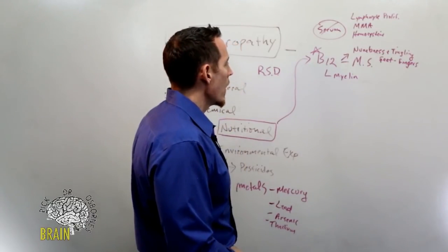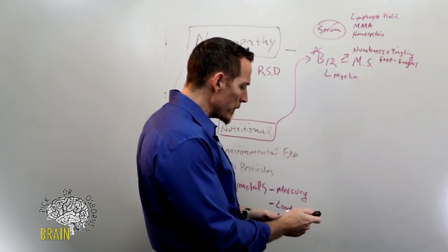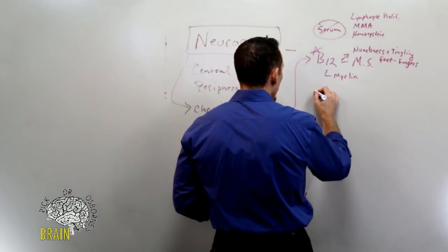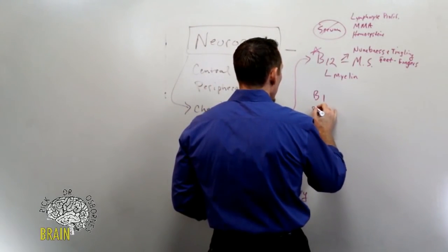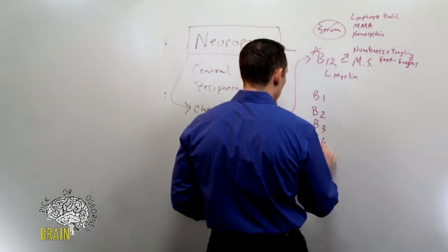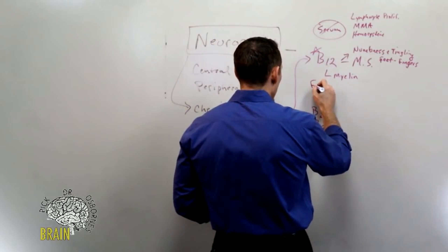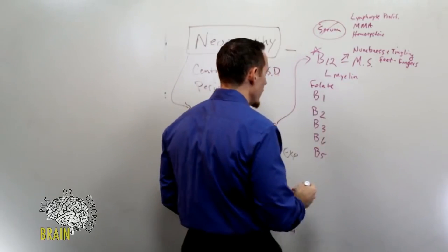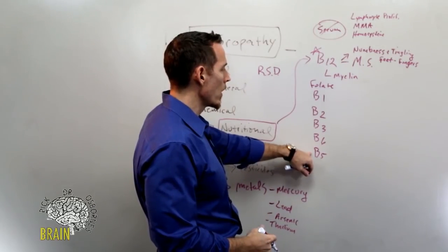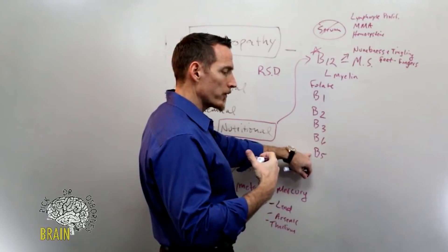B12 deficiency, very very common. Now B vitamins in general, there are a lot of B vitamins that can cause neuropathy. We'll go down the list here: vitamin B1, vitamin B2, vitamin B3, vitamin B6, vitamin B5, and folate. We'll just add folate in up here. These can all cause neuropathy. Every single one of these deficiencies of B vitamins can cause neuropathy for different reasons. Some of them are more well understood than others, at least from a physiology standpoint.